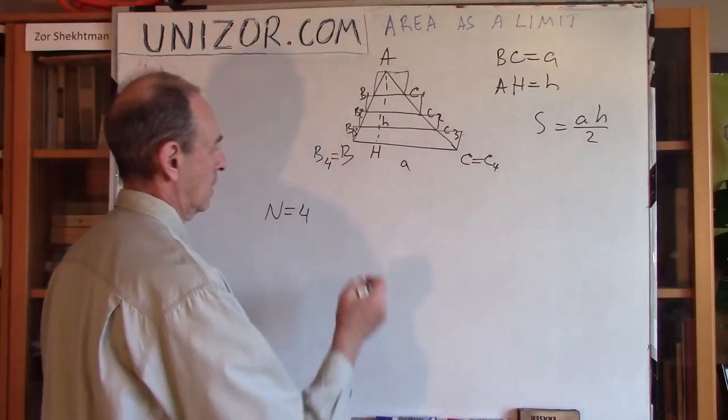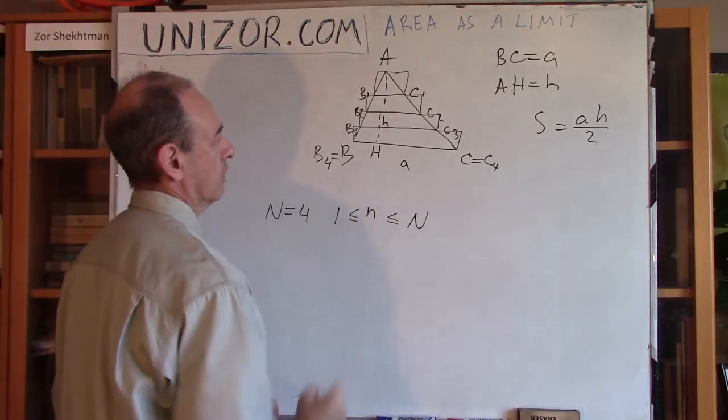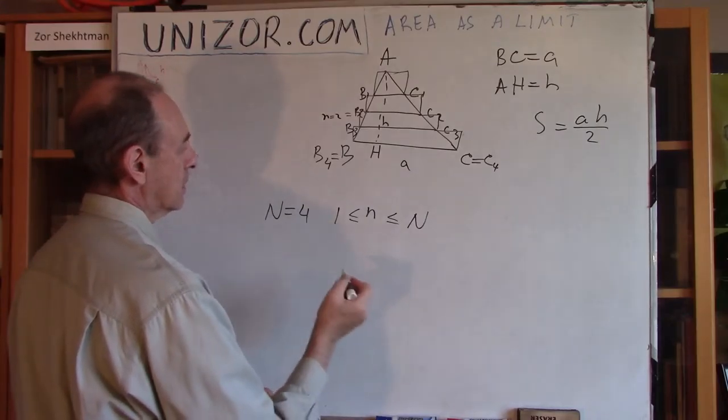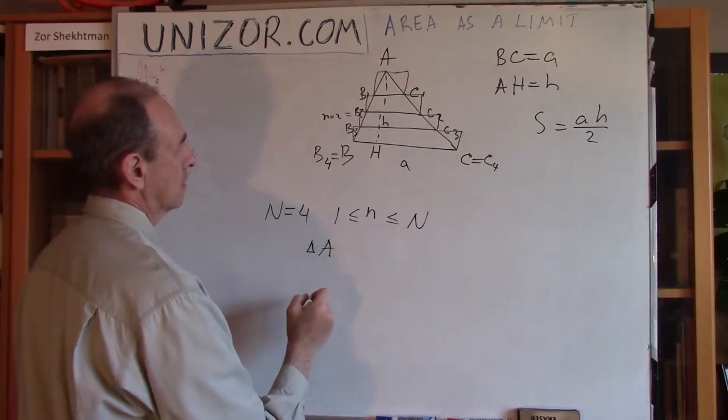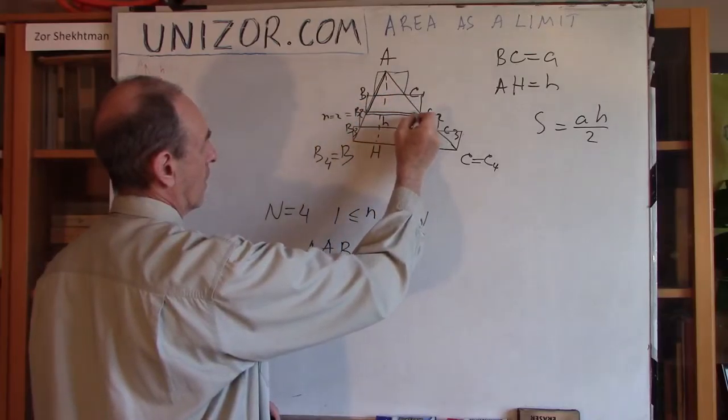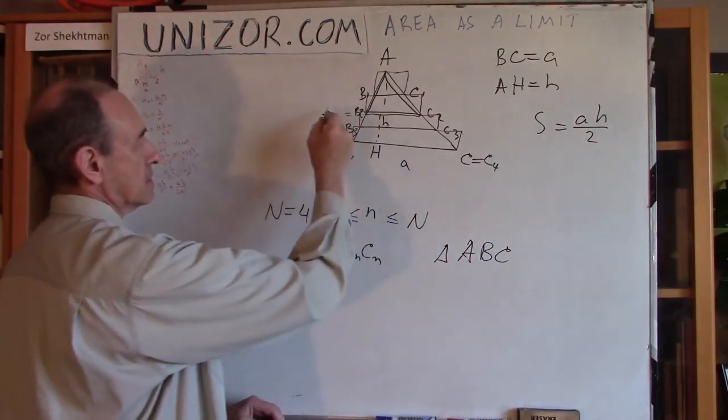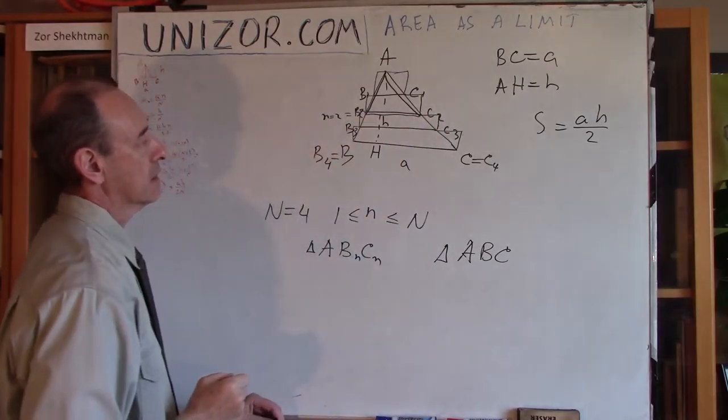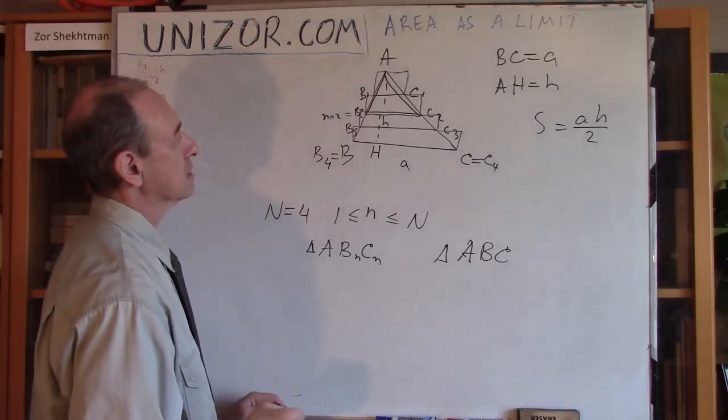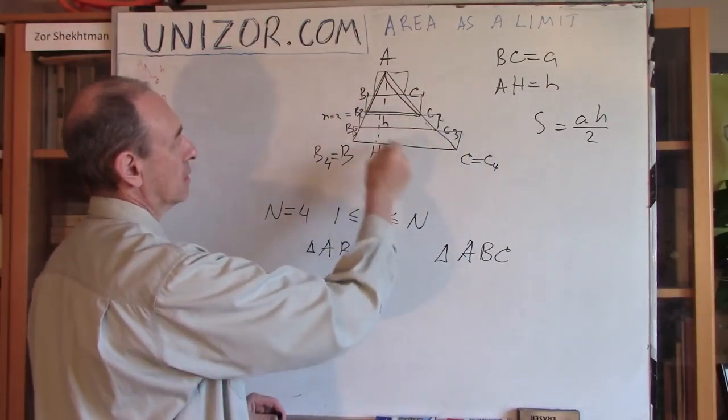So let's consider a particular number N, which is from 1 to N. Let's say in this case it's B2. N equals 2 in this case. And let's consider a triangle ABN, CN, which is this triangle, and triangle ABC. Now, this line from BN to CN is parallel to BC. The obvious consequence of this is that these two triangles are similar to each other, because these lines are common, this is parallel, so all angles are the same.